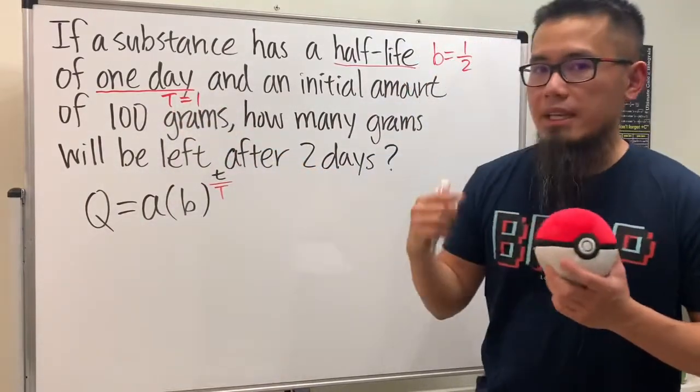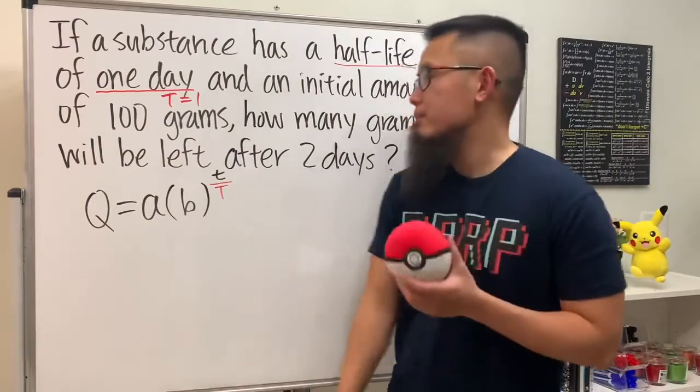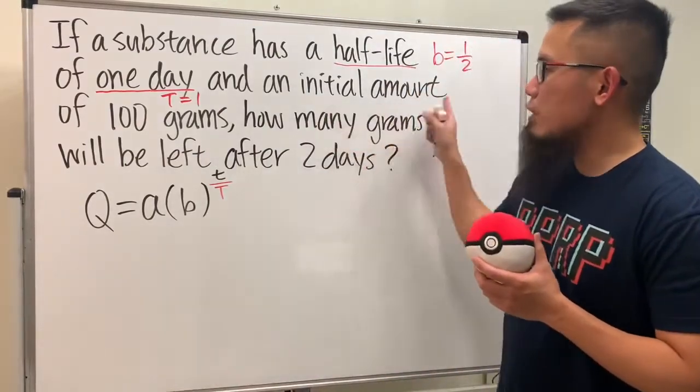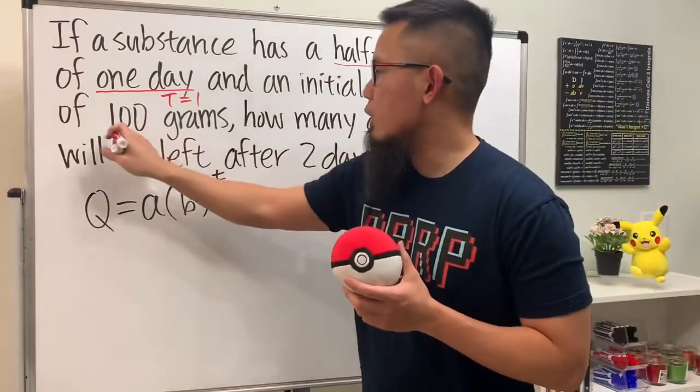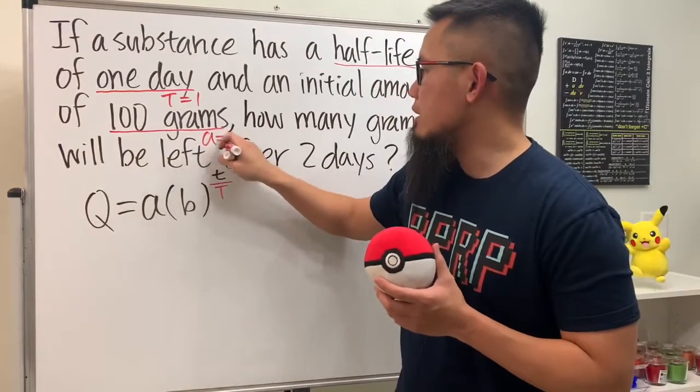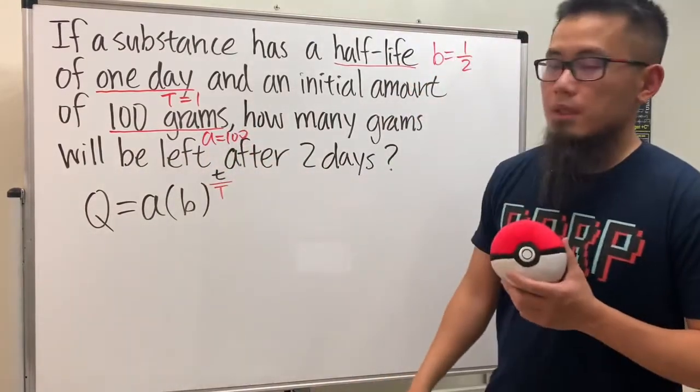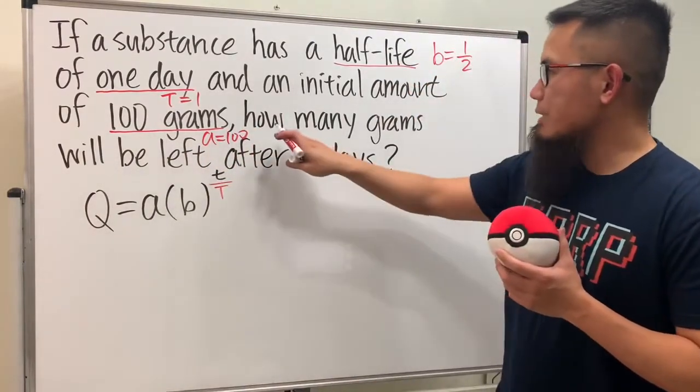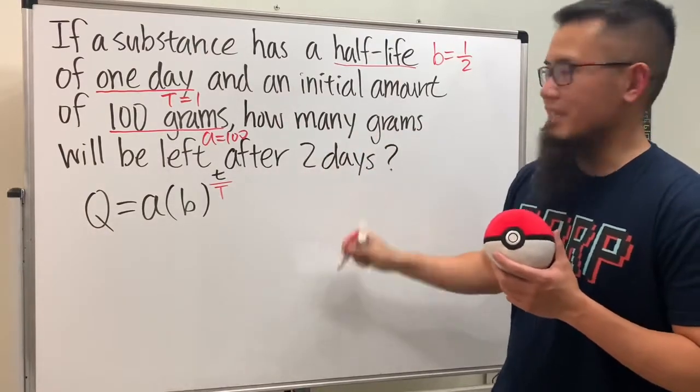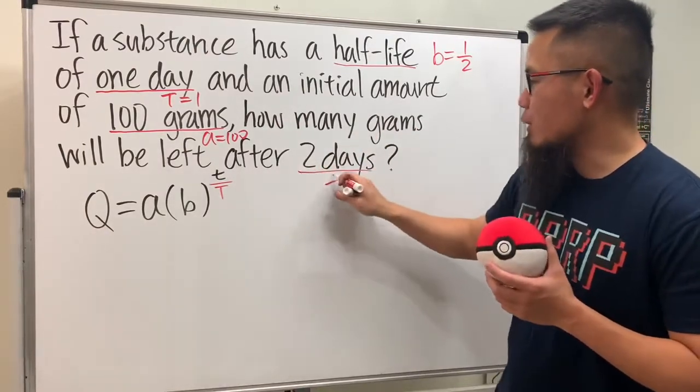The initial amount is 100 grams, so a equals 100. The last part says how many grams will be left after two days, so the two days is little t, which will be 2.